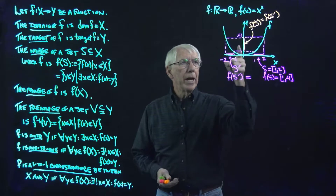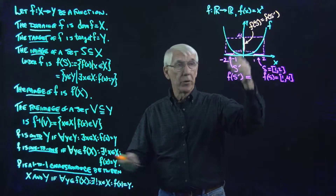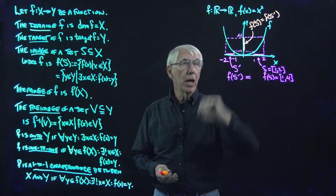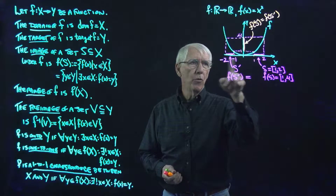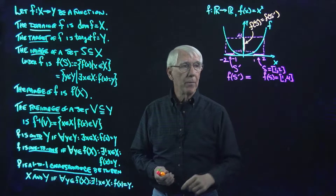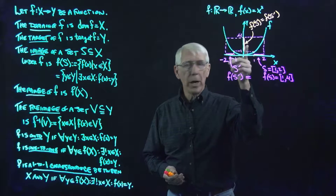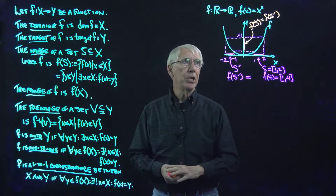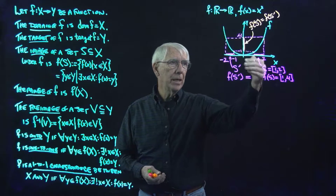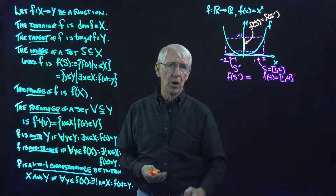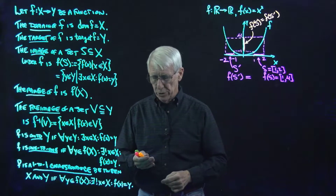So it's clear then that this function is not 1-to-1, because we have points in the range of f that get hit by more than one point from the domain. And is it onto? It is not onto ℝ, because none of the negative elements of ℝ get hit. So this is neither 1-to-1 nor onto.